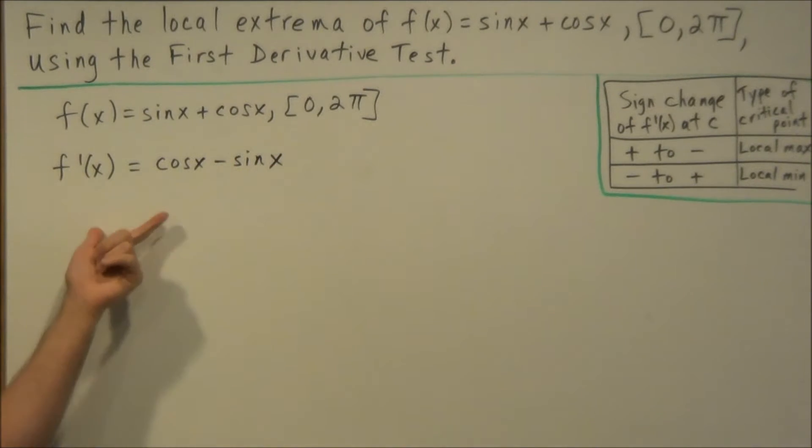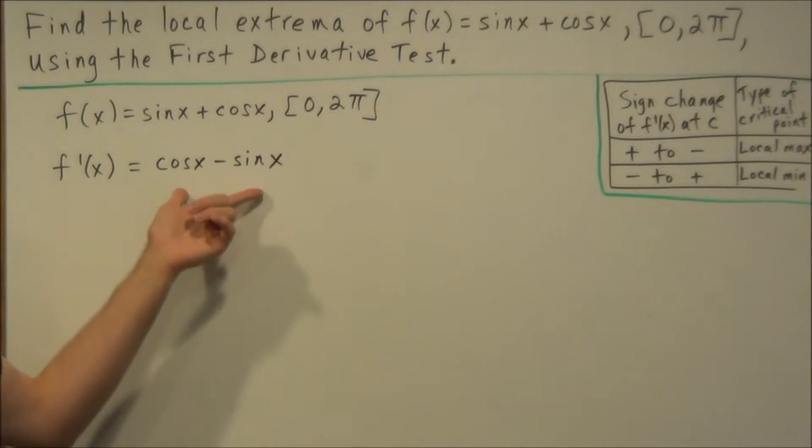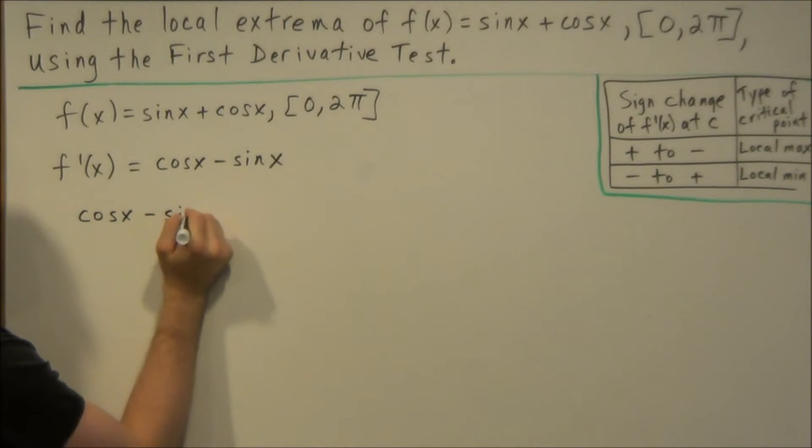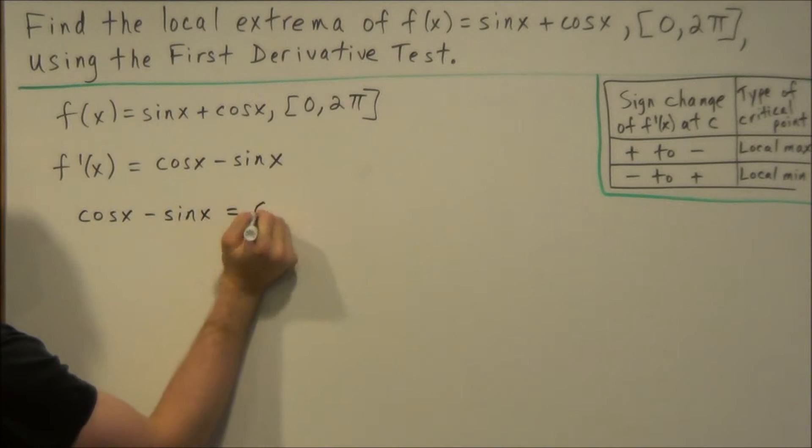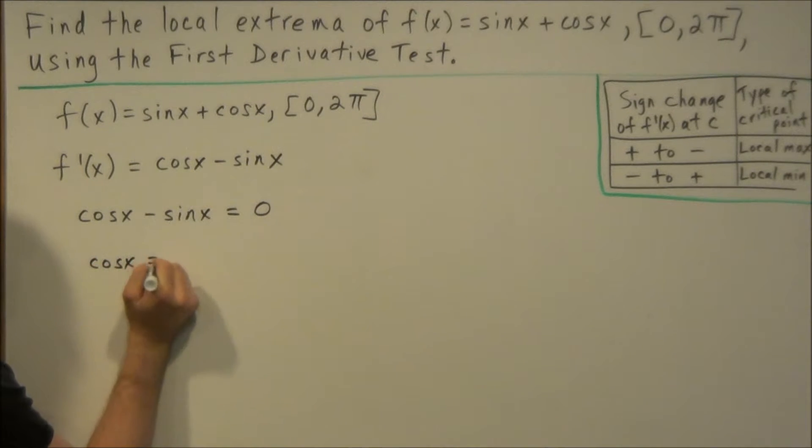So from this stage here, we need to find the critical values of f(x). So we're going to set our first derivative equal to 0. So we'll have cosine x minus sine x equals 0. But to solve here, we could add sine x to the other side.